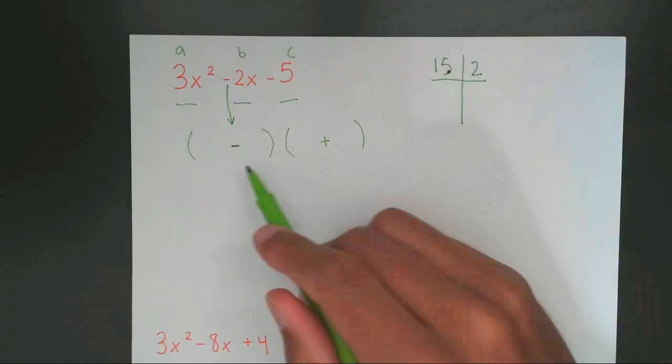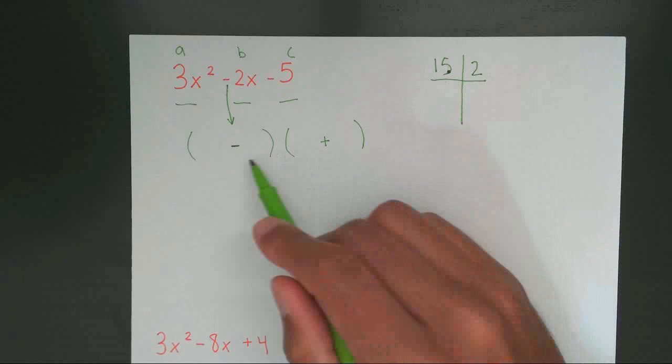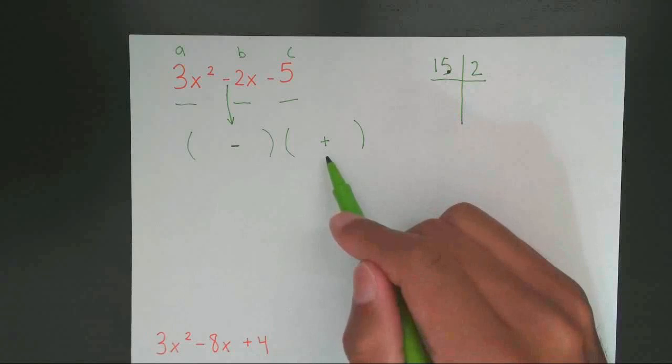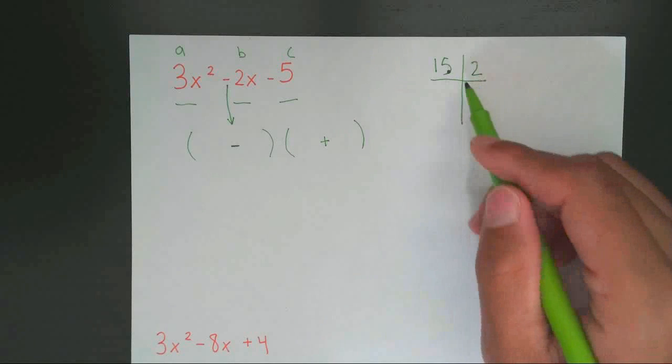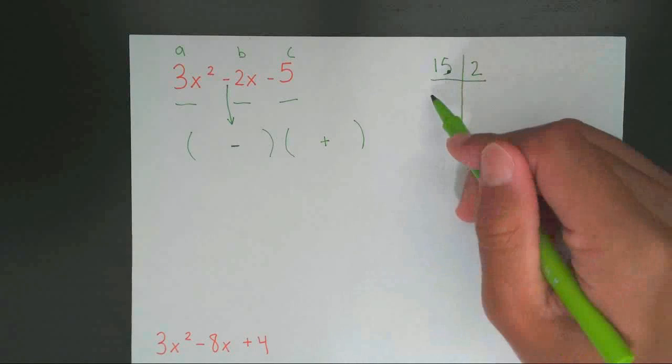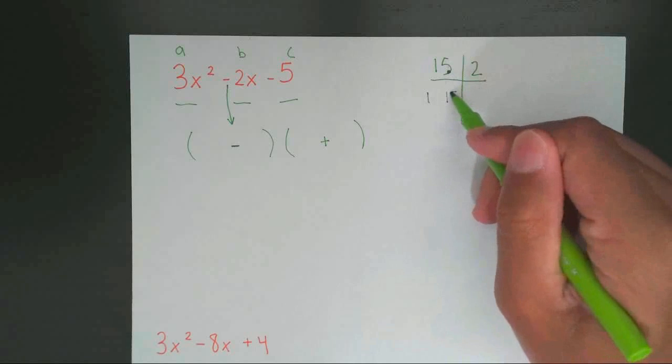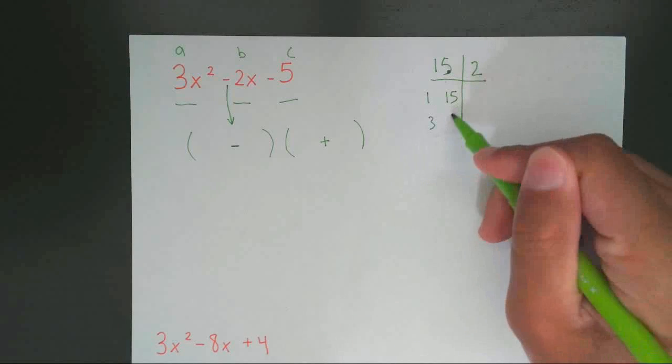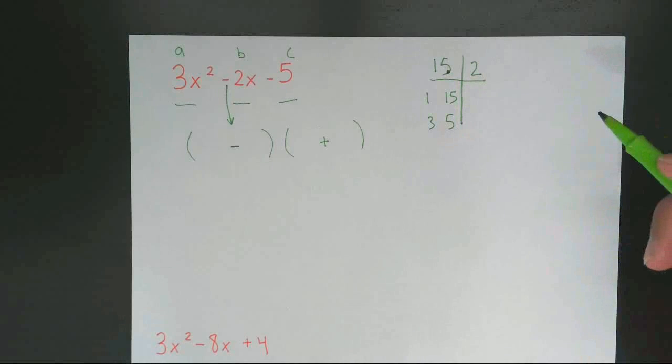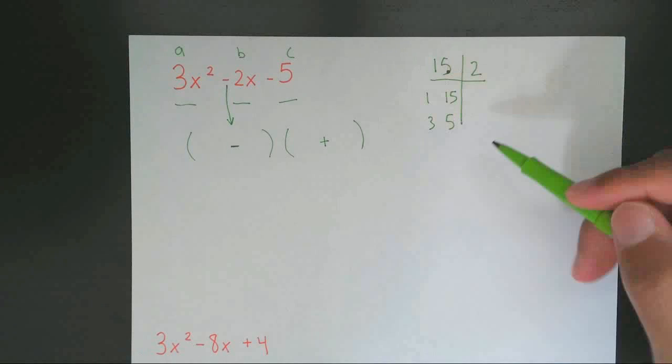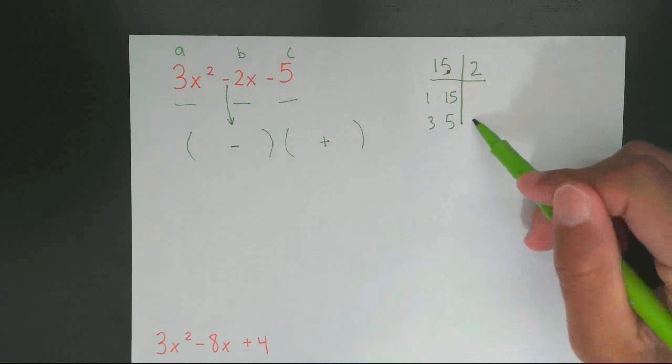Our goal is to get 15 and add or subtract to give us 2. Now since the signs are opposite meaning they're different, our goal is to subtract to give us 2. Subtract the factors of 15. So I'm going to list all the factors of 15. 1, 15, 3, and 5. Now since the signs are opposite which one subtracts to give you 2? 3 and 5.